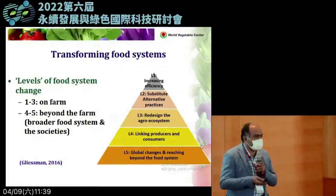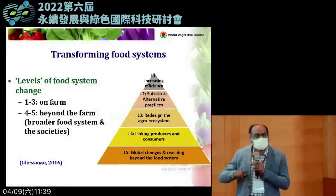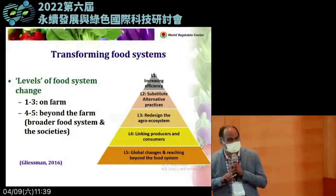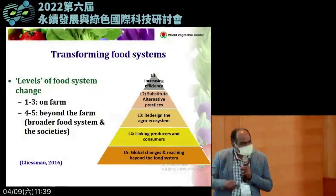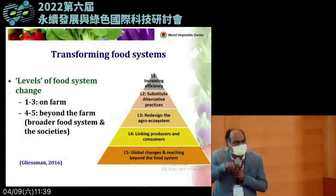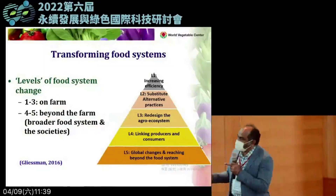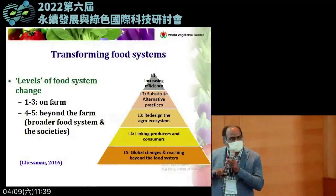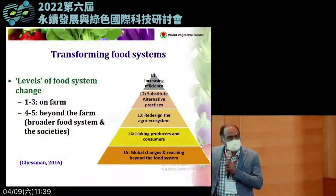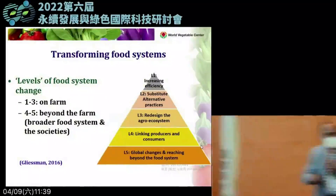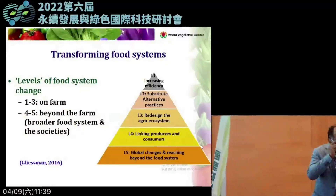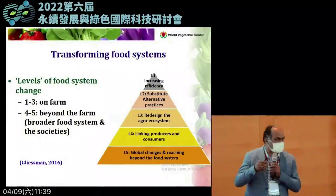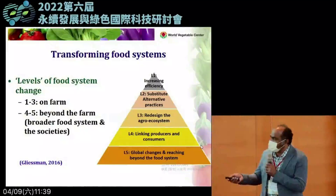As proposed by Gliessman, we need to redesign the entire agroecosystem. This morning we have been hearing about regenerative agriculture practices that look at the entire production system — not just a particular crop. The redesigning looks at the soil, water, and cropping systems together as a whole production system. Then even the food system must move beyond this, because unless we connect the producer with the consumer, what is the purpose of increasing production?